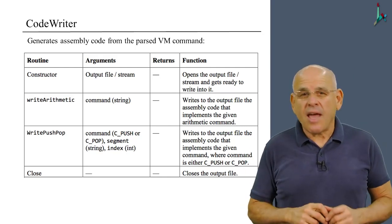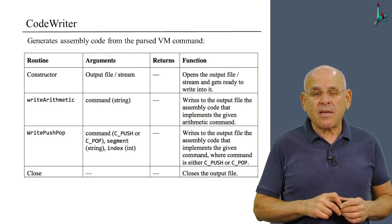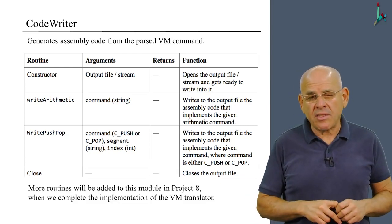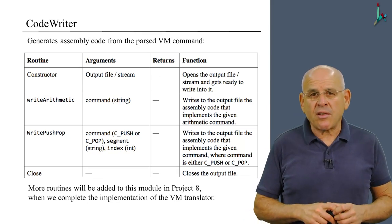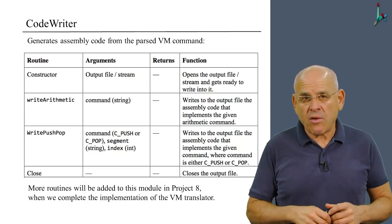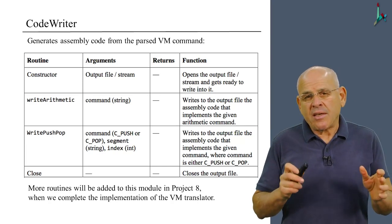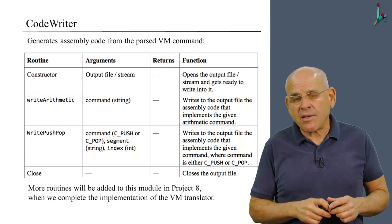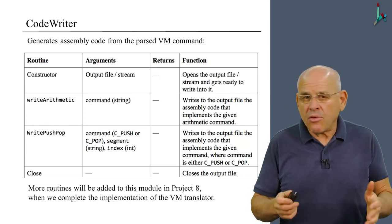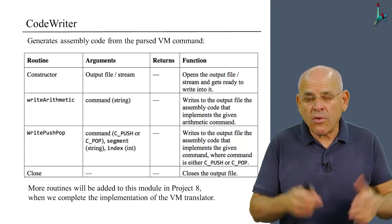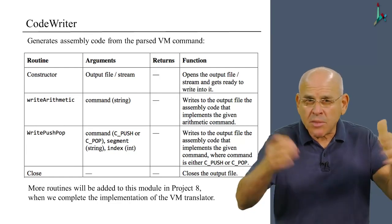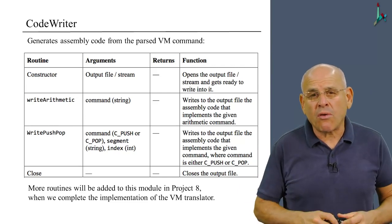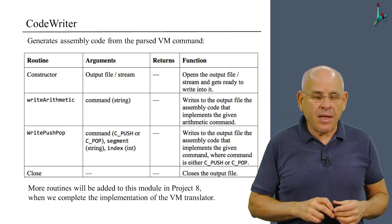So this completes the API of our basic VM translator, and more routines will be added to this API in the next project, where we handle the rest of the VM language. Now, obviously, what we gave here is what we think is a good architecture for the VM translator, and you're welcome to add to your own code more private methods, which are not exposed to the outside, and use these private methods to make your code more manageable, elegant, and readable.